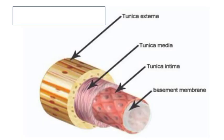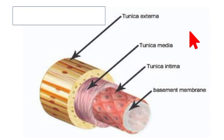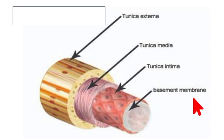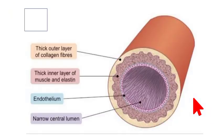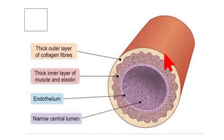An artery consists of tunica externa, tunica media, tunica intima, and a basement membrane. Tunica externa is the outer layer. It is made up of collagen fibers.